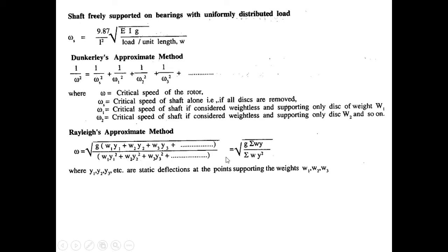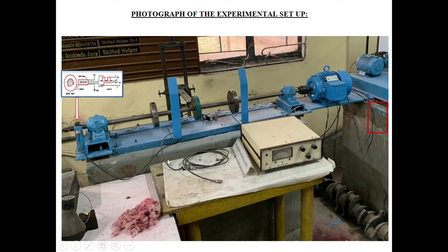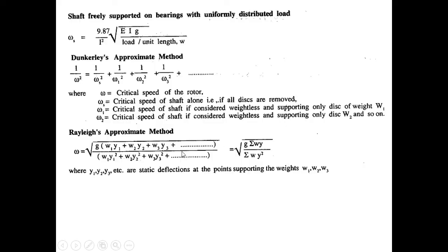Another method is Rayleigh's approximate method. Here, this is the equation where y1, y2, etc. are the static deflections at the points supporting the weights w1, w2, w3. You have already calculated delta1, delta2, delta3, which are referred here as y1, y2, y3. These are the theoretical calculations, and what we will do is calculate or observe experimentally the critical speed and make a comparison with these results.